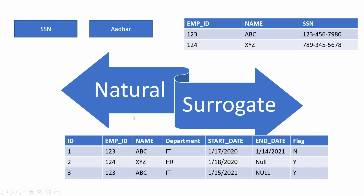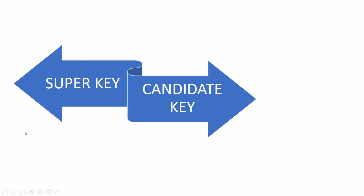In short, a natural key is something that the dataset already has, while a surrogate key is generated during runtime when data is inserted. Now let's understand what is super key and candidate key with this example.